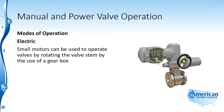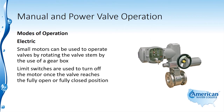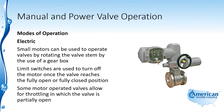Small motors can be used to operate valves by rotating the valve stem by the use of a gearbox. Limit switches are used to turn off the motor once the valve reaches the fully open or fully closed position. Some motor-operated valves allow for throttling, in which the valve is partially open.